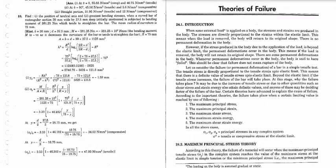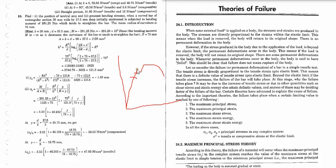One of the topics we covered was the stress and strain diagram. In that stress and strain diagram, we saw a relationship between stress and strain. We drew the curve and identified certain points like the proportional limit, elastic limit, yield point, and fracture point. We also studied Hooke's law, which states that stress and strain are proportional to each other within the elastic limit.